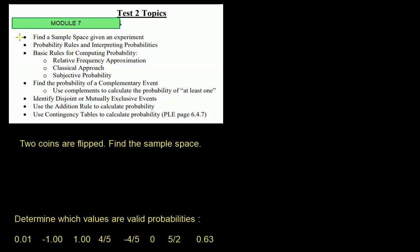The first thing you want to know is how to find a sample space given some sort of experiment. Here they say two coins are flipped — that's the experiment. Find the sample space basically means to list all the possible outcomes. We use the notation S for sample space, putting it in curly brackets, and then list all the different possible outcomes.